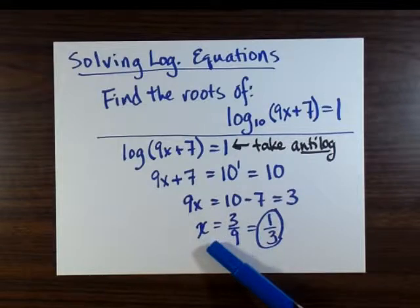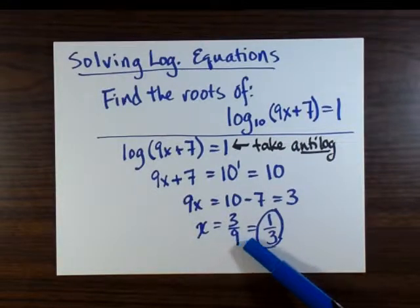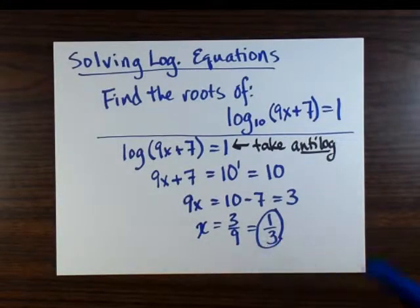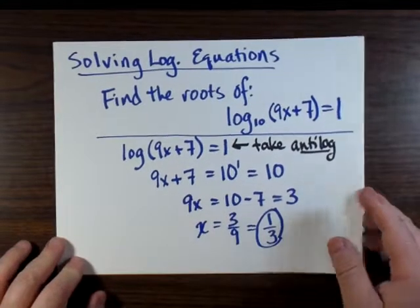And now we can solve for x. Taking away 7 from both sides, we get 3 and 9x on the other side. And x becomes 1 third, or 3 over 9.